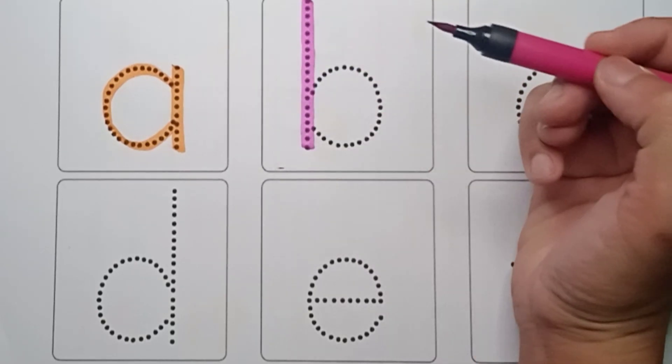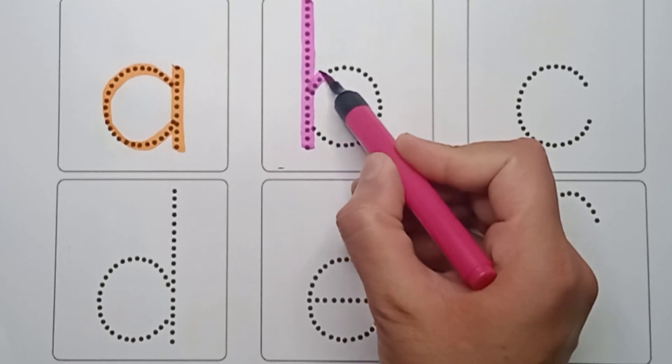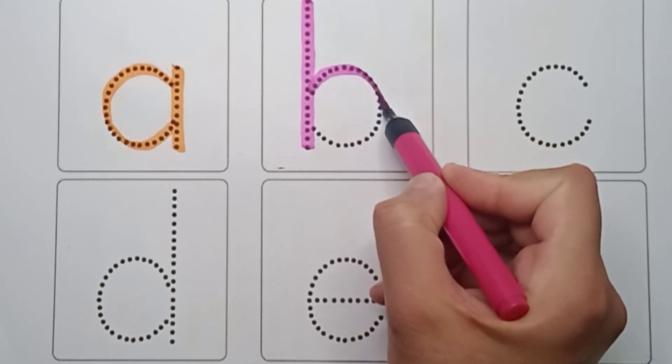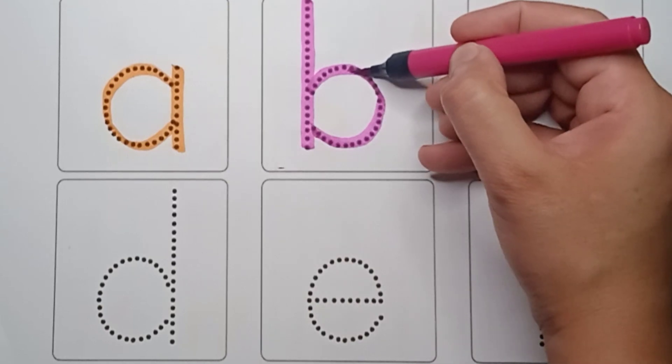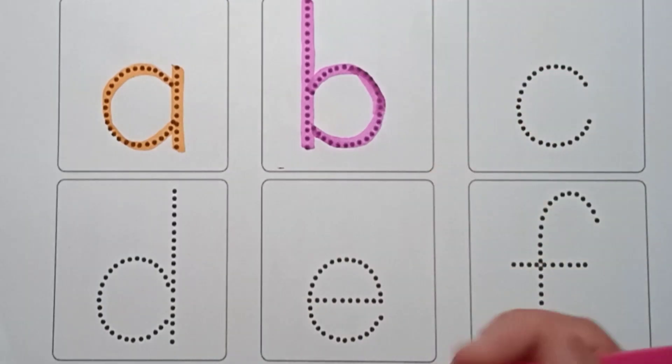First make a standing line and reverse C like this. It's B. B is for balloon.